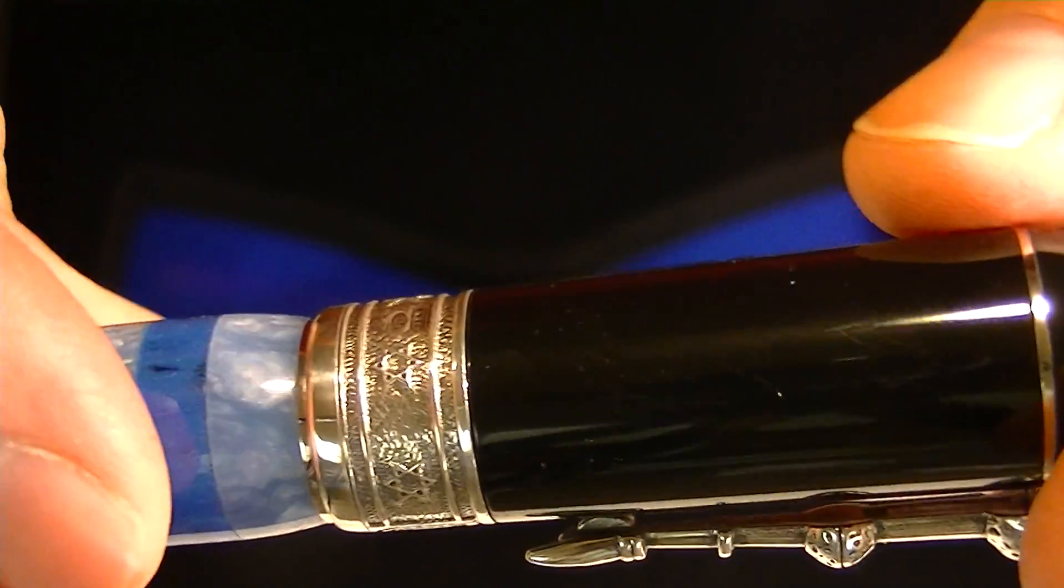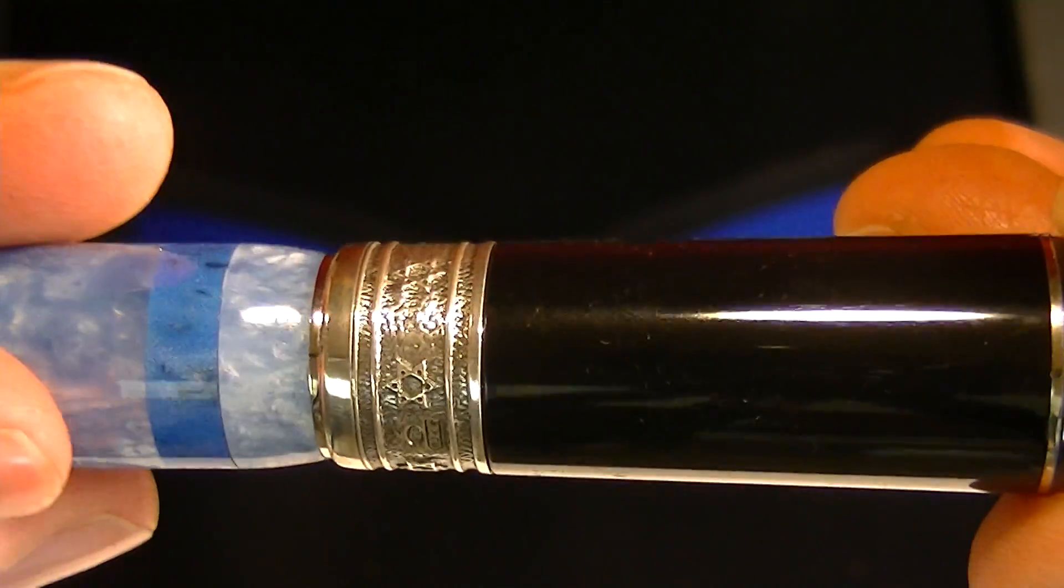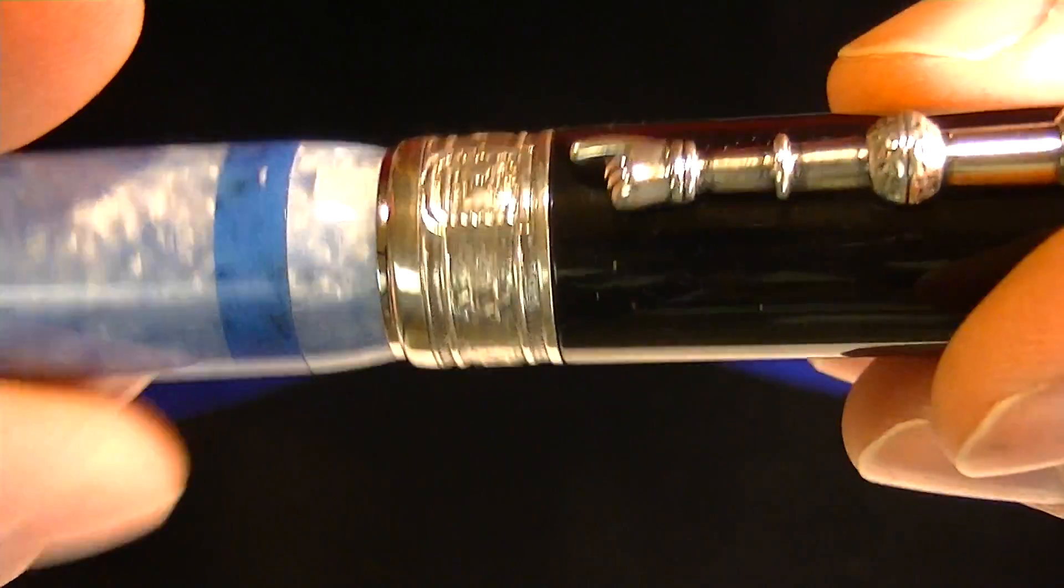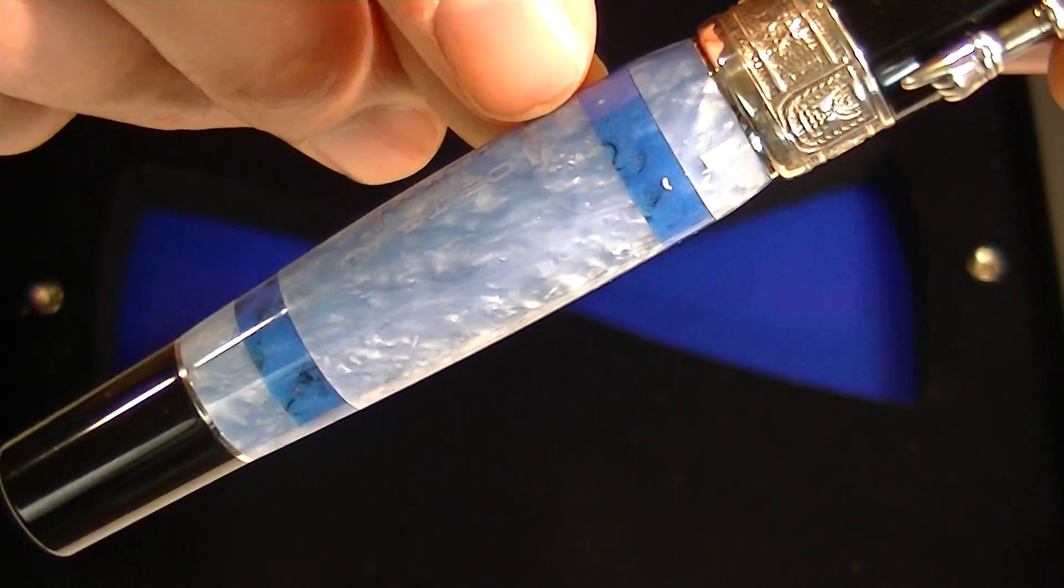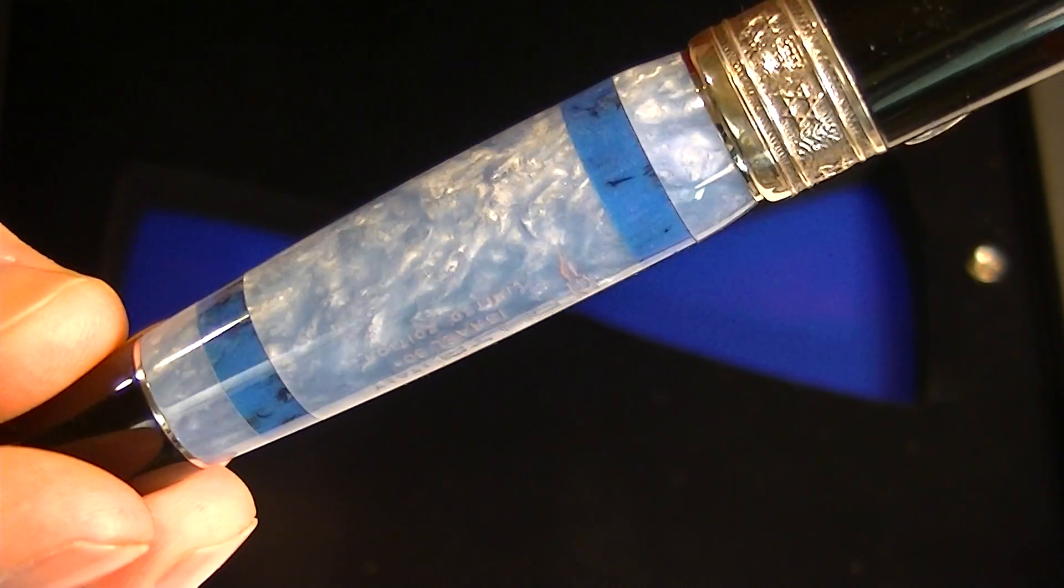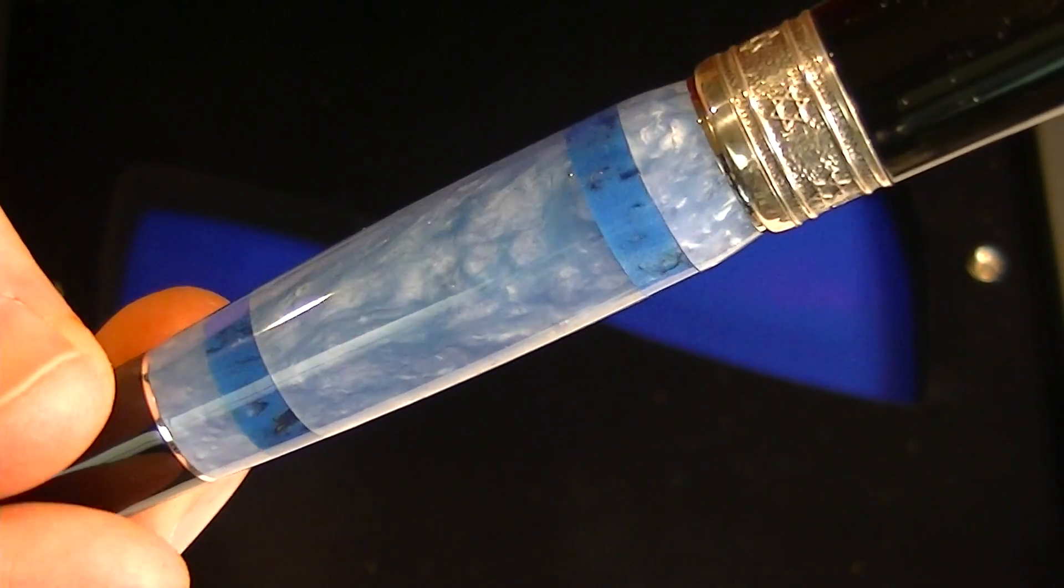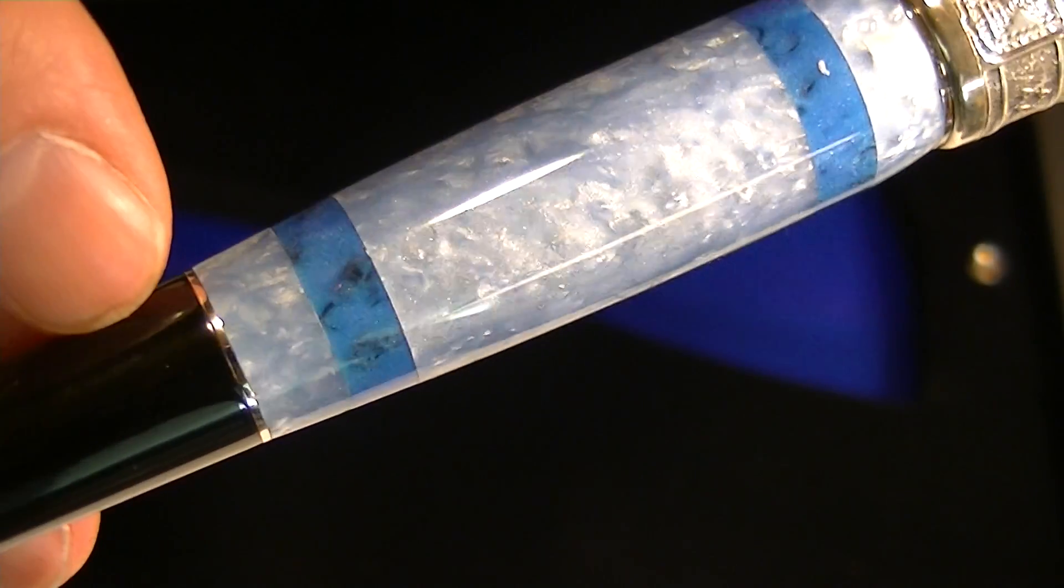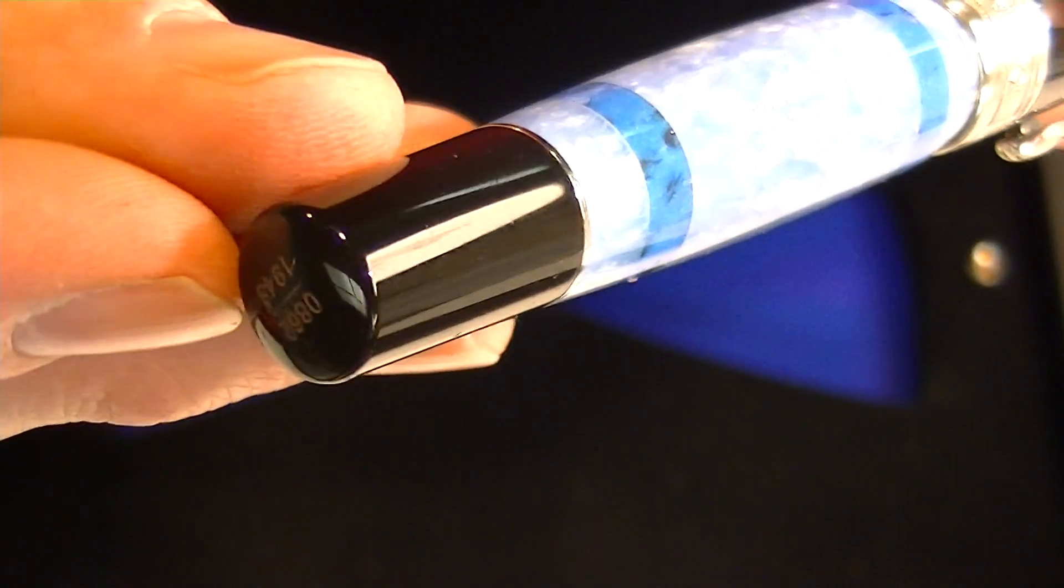Around the band we have the Star of David several times. The barrel of the pen has some marbled light and darker bands of blue. And then we have a small chrome band with a black end to the barrel.